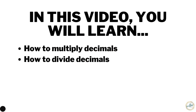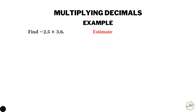In this video you will learn how to multiply decimals and how to divide decimals. Multiplying decimals, example one: find negative two and a half times 3.6. Let's start by estimating — let's estimate as negative two and a half times four.